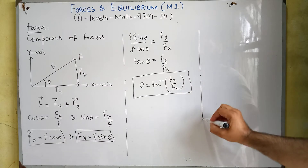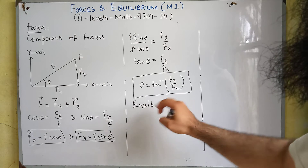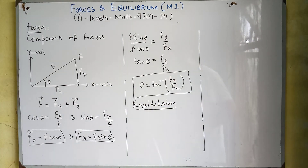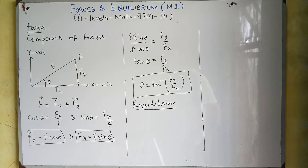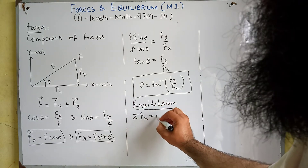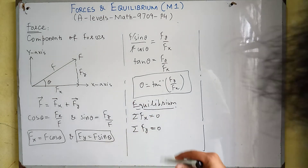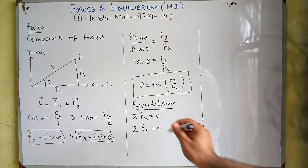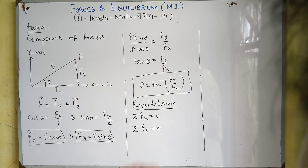After this we have the definition of equilibrium. If the net force acting upon a body is zero, then the body is said to be in the state of equilibrium. For this chapter we will have two conditions: summation of Fx equals zero and summation of Fy equals zero. This means the sum of all horizontal forces and the sum of all vertical forces must each be equal to zero — this is the condition of equilibrium.